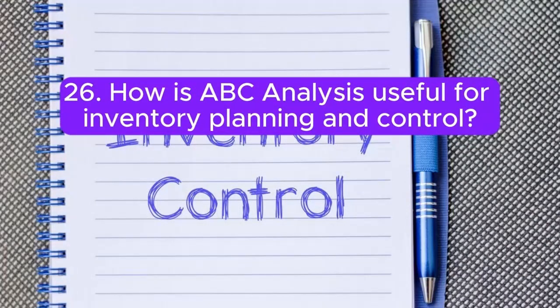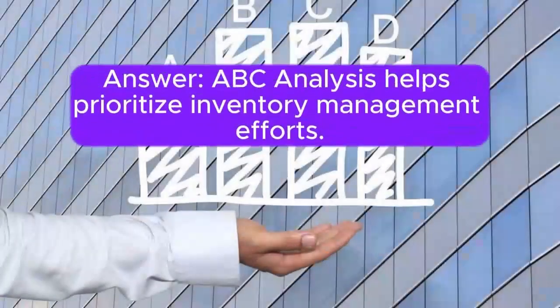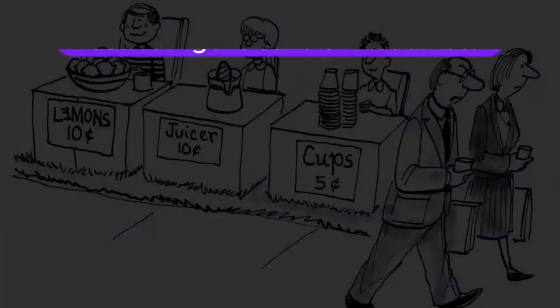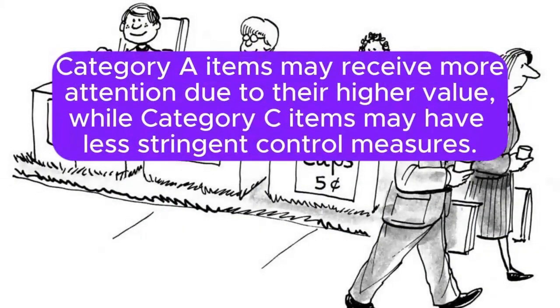Question 26: How is ABC analysis useful for inventory planning and control? Answer: ABC analysis helps prioritize inventory management efforts. Category A items may receive more attention due to their higher value, while Category C items may have less stringent control measures.